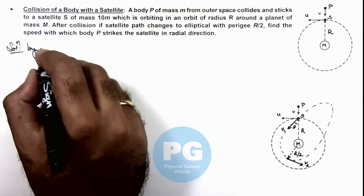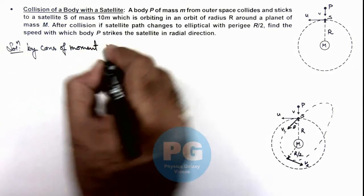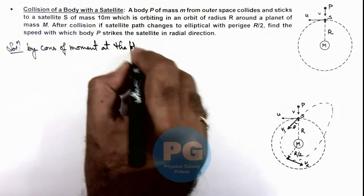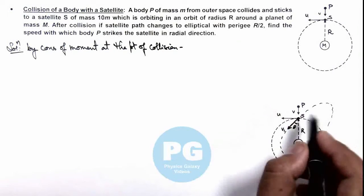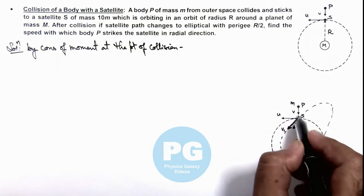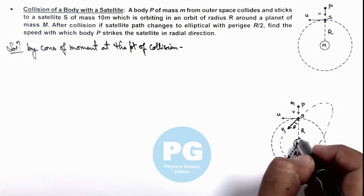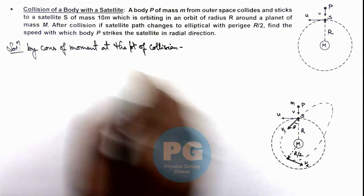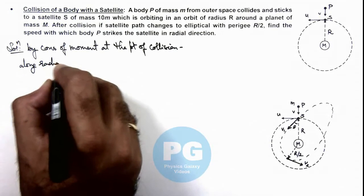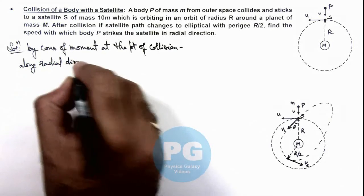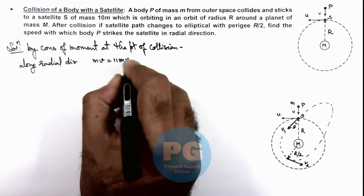By conservation of momentum at the point of collision, as the body of mass m was moving with a velocity v and after collision the combined body is having a velocity in radial direction as v1 cos theta, we can write along radial direction: mv equals 11m v1 cos theta.